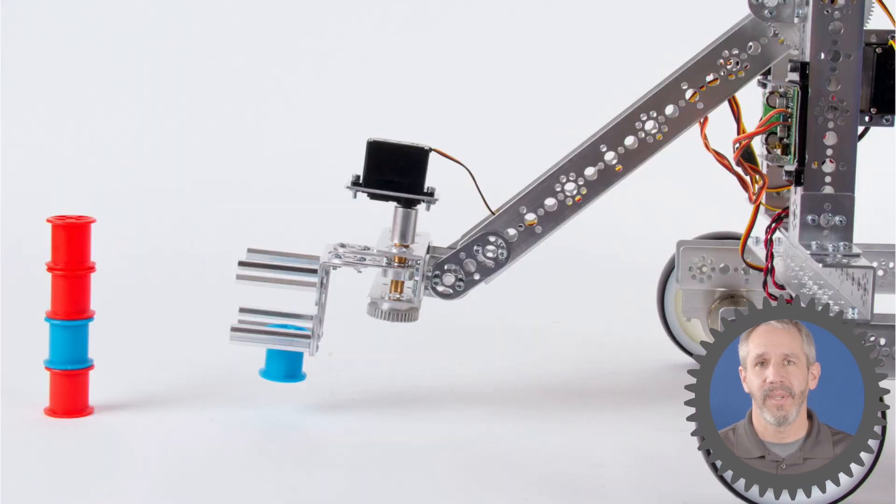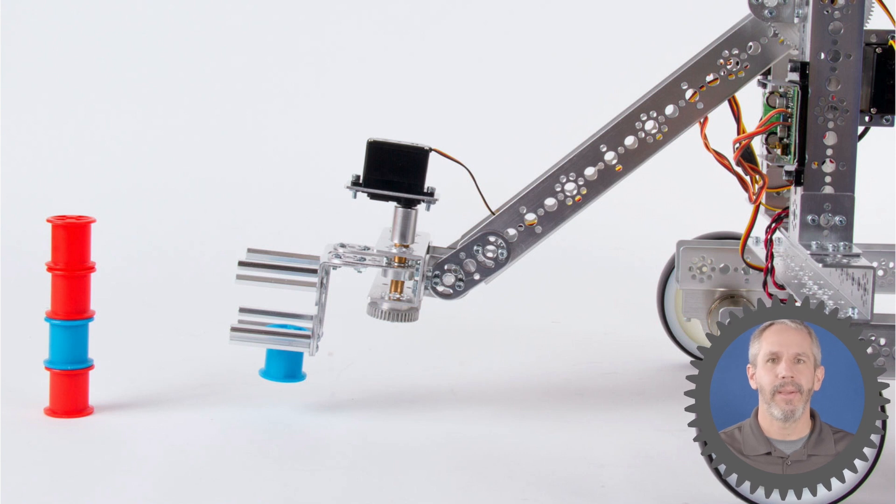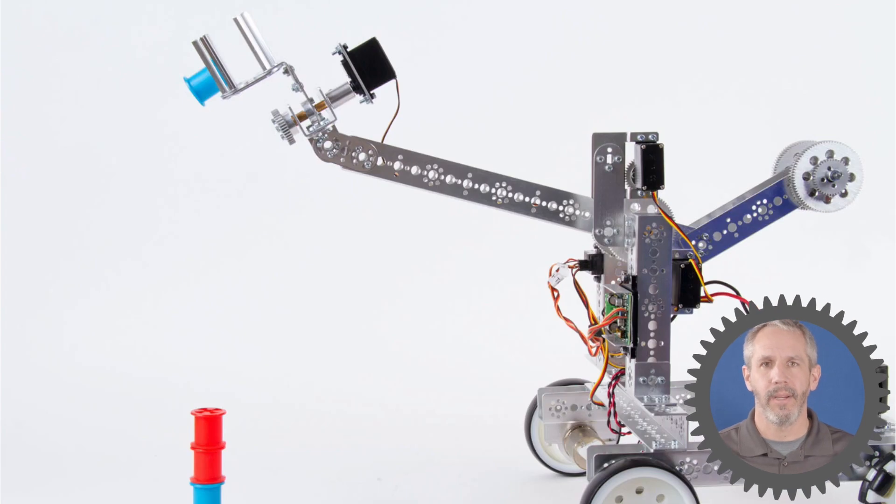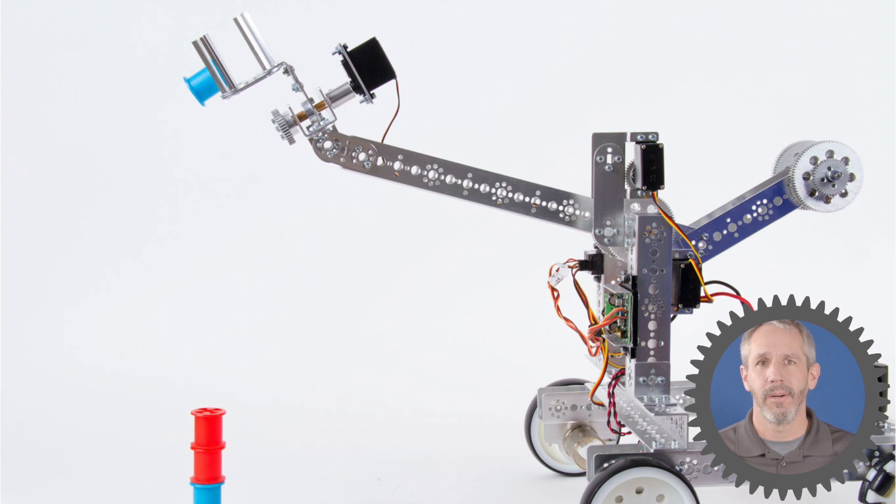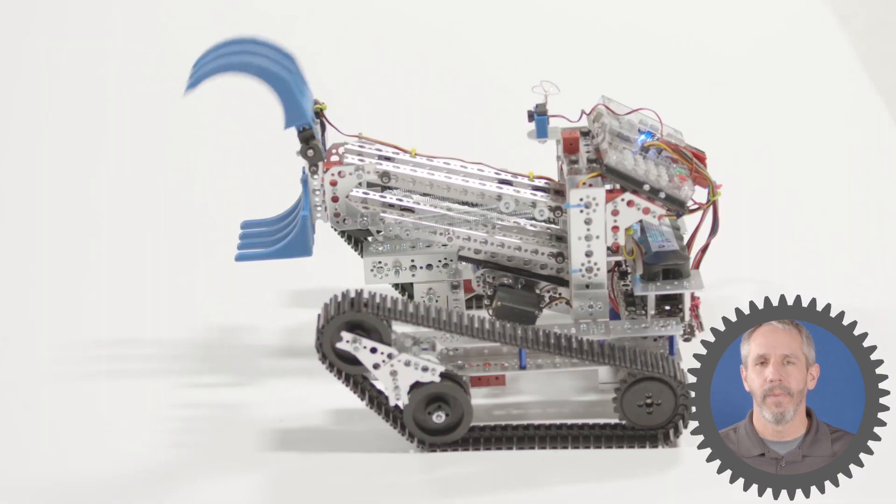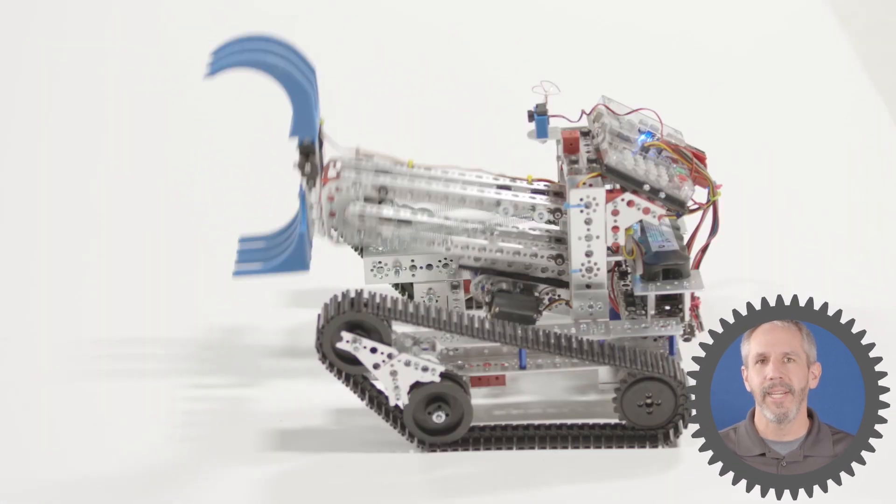The downside to using lever arms is that as you pick up an object, the object rotates with the lever arm around the pivot. As this robot picks up the spool, notice how the spool tilts and rotates with the arm. If you need your object to stay in an upright position or set on a certain side or stacked, then a lever arm might not be the best way to go.